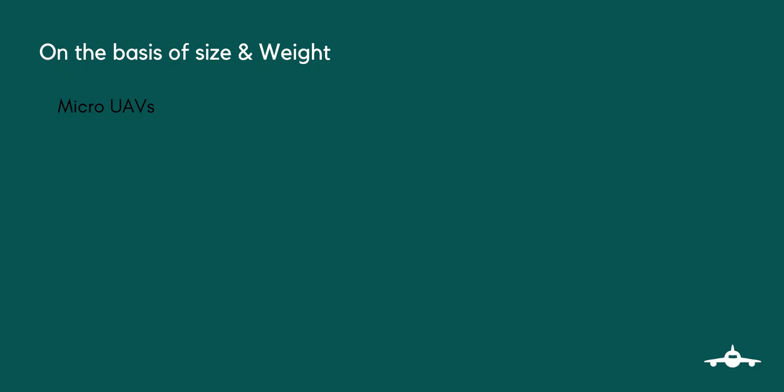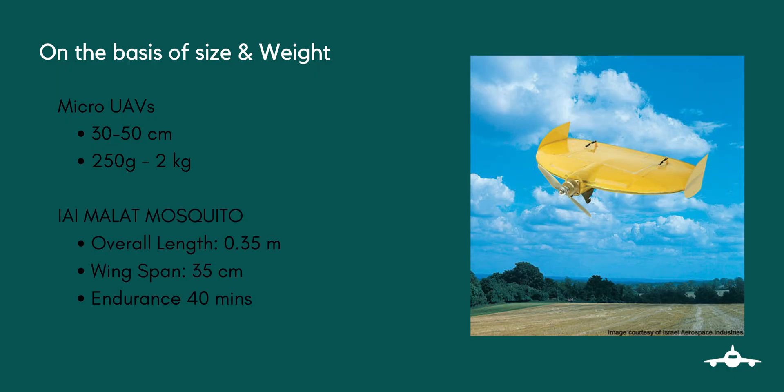Micro UAVs: this class includes UAVs with dimension restrictions ranging from the size of a large insect, that is 30 to 50 centimeters long, and weighing from 250 grams up to 2 kg. The insect-like UAVs with flapping or rotary wings are a popular micro design. They are extremely small and lightweight, and can be used for spying and biological warfare.